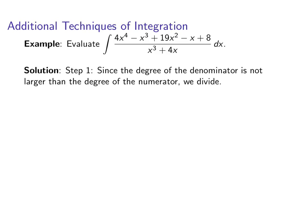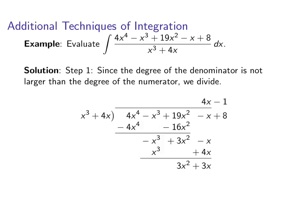I'm going to divide x^3 + 4x into the numerator. Alright, so here's all the gory details on the long division. And so this time we end up with a remainder. So here's our quotient, the 4x - 1, but here's a remainder.